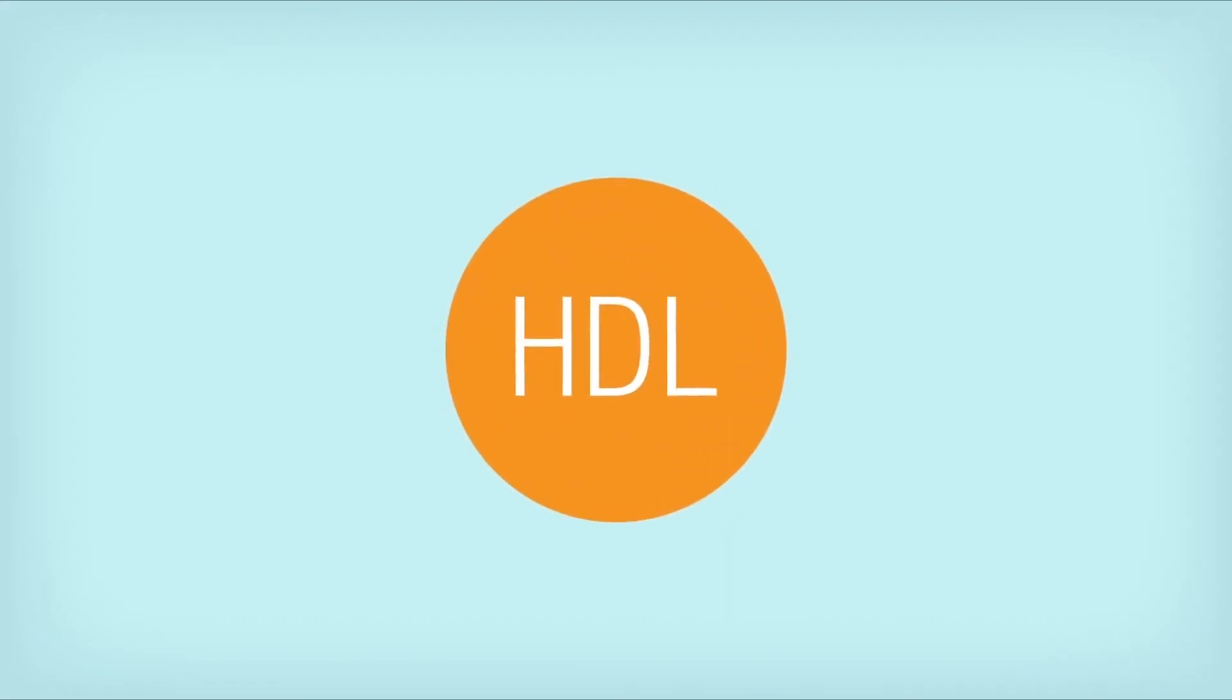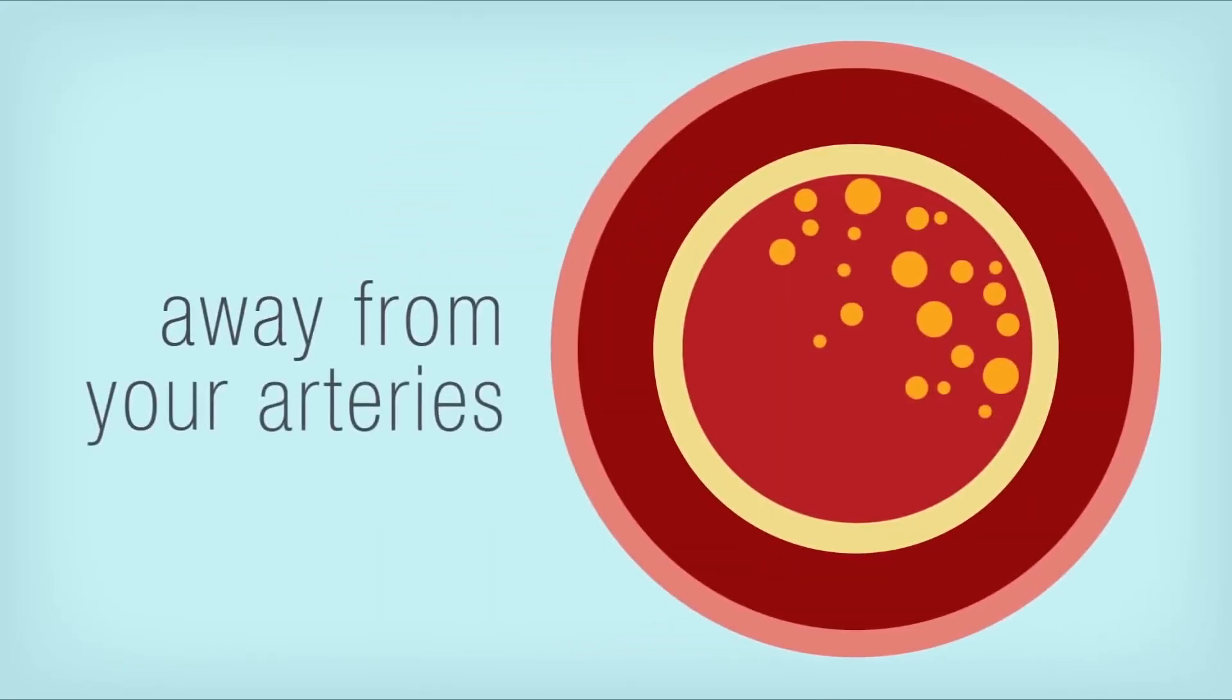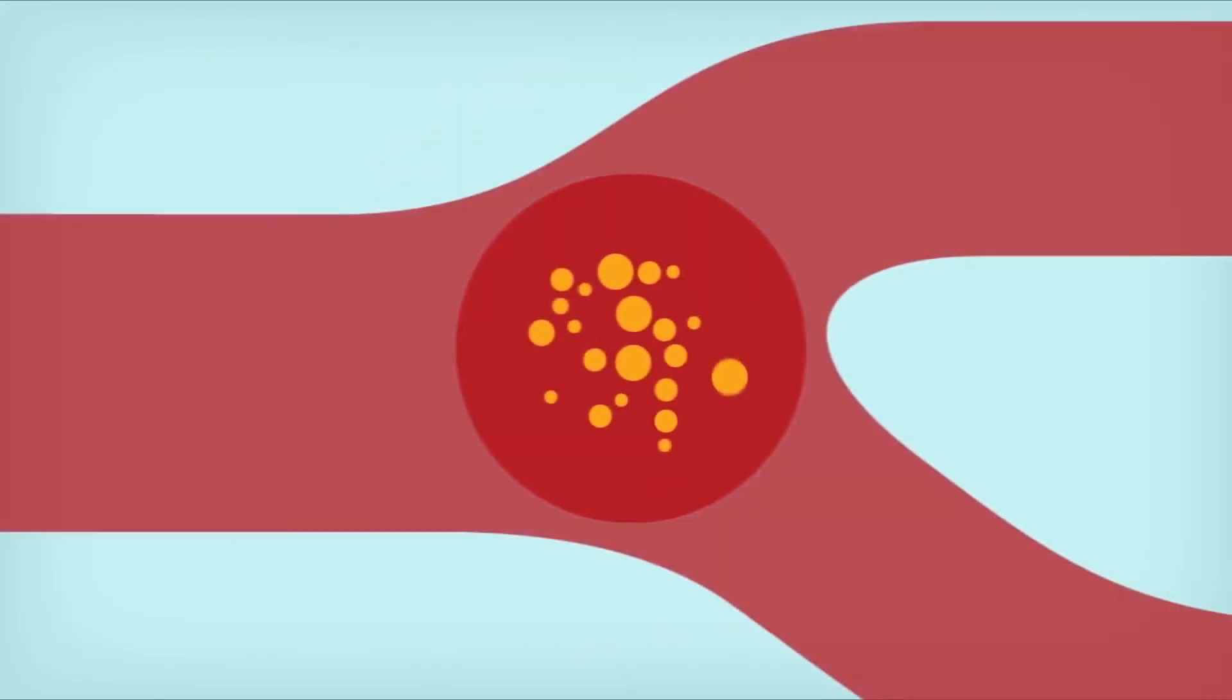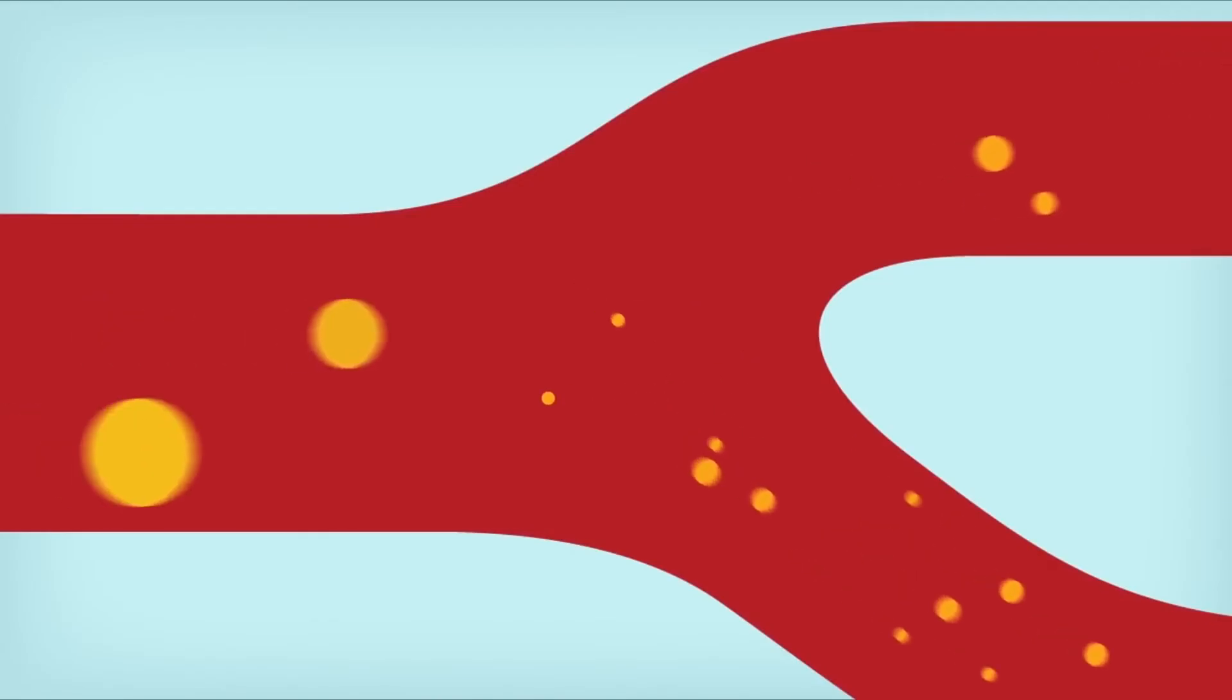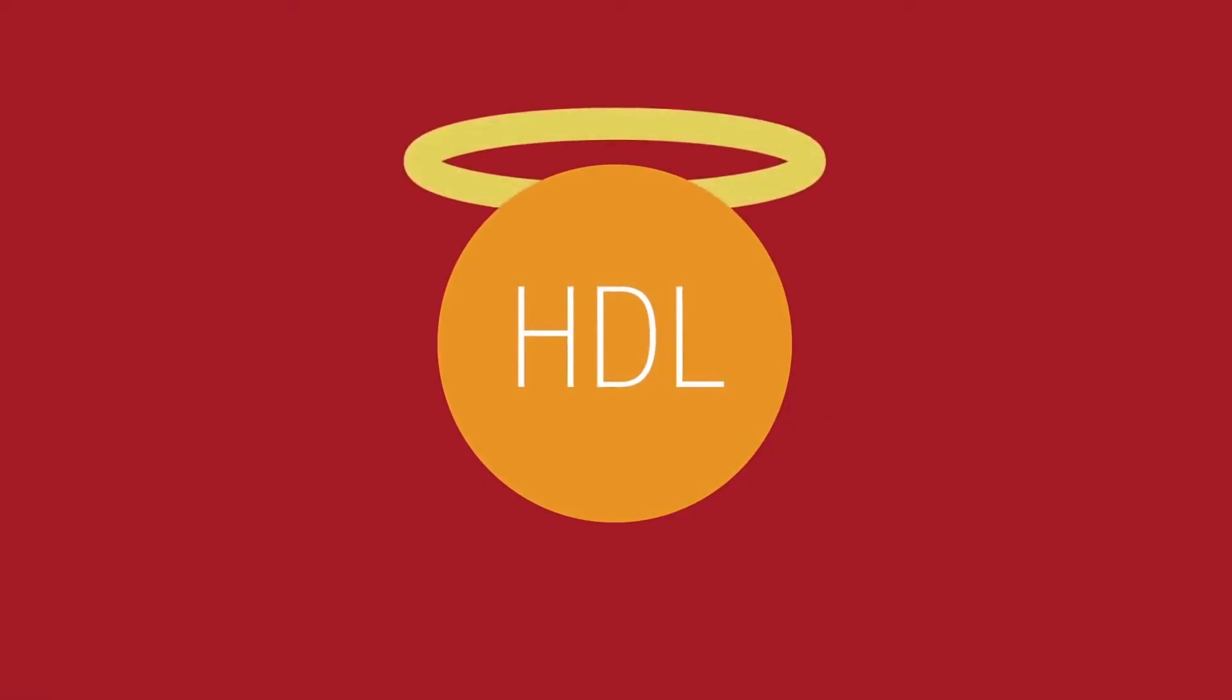On the other hand, HDL, or high-density lipoprotein, is the good kind of cholesterol. It carries LDL, the bad stuff, away from your arteries and back to your liver, where it's broken down and processed by your body. That's why you want your HDL to be higher. In this case, the H in HDL is for higher or healthy.